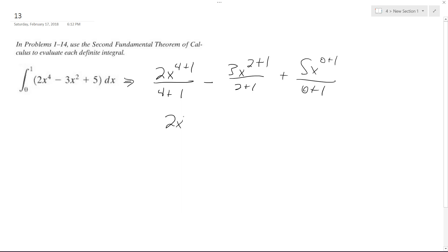and then plus 5x raised to the 0 plus 1 over 0 plus 1. So I end up with 2x raised to the 5th over 5, minus 3x raised to the 3rd over 3 plus 5x.